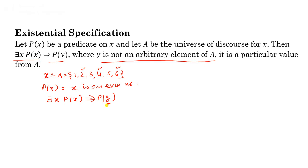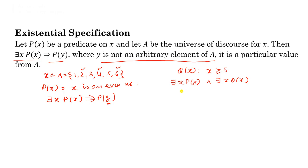Whenever we apply Existential Specification, y is not arbitrary — it holds for only a few values of the universe of discourse. Now consider another example: suppose Q(x) is 'x is greater than or equal to 5.' If we write 'there exists x, P(x)' and 'there exists x, Q(x)', can we use the same variable y for both?